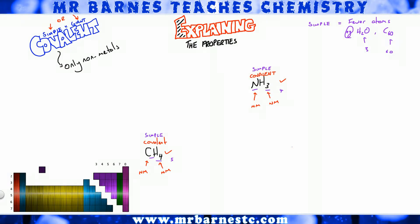Now that we know how to work out whether we've got simple covalent, we need to remember the properties. Simply, anything that is simple covalent will have a low melting point — it's the only type of bonding with a low melting point. Also, all covalent compounds do not conduct electricity, with a few exceptions, but not for simple covalent.